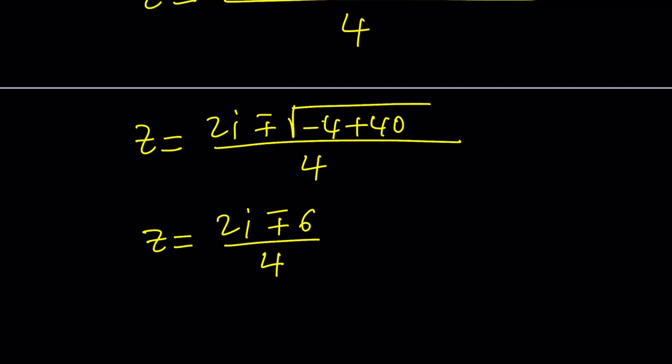And this can be simplified and written as follows. We can go ahead and write it as plus minus 3 over 2 plus 1 half of i. So the plus minus is going to be in front of the 3 halves, because that's where the sign changes. So notice that this equation or these solutions are not in standard form.